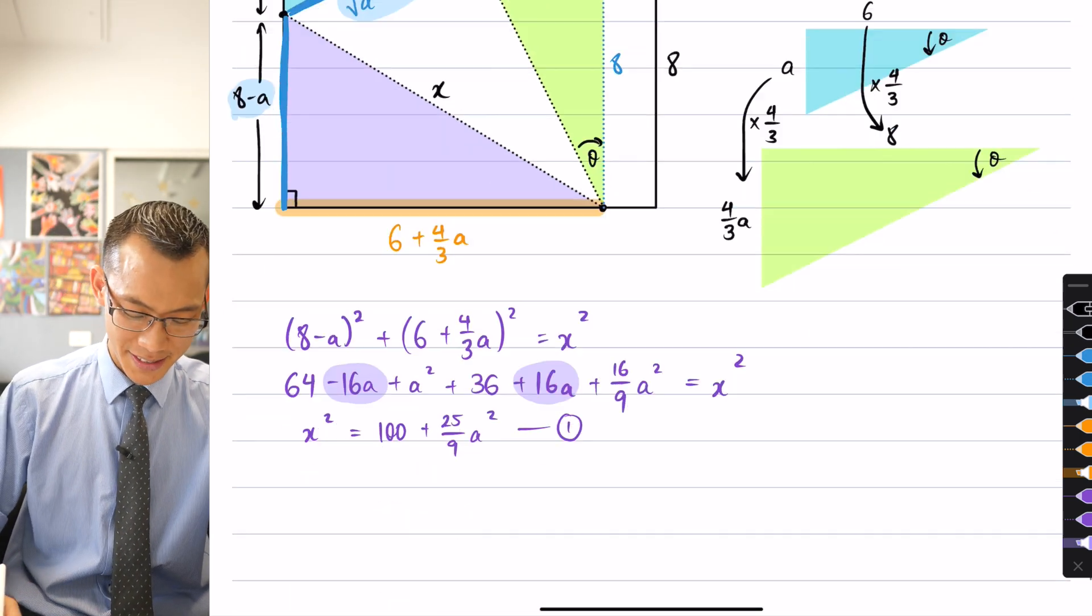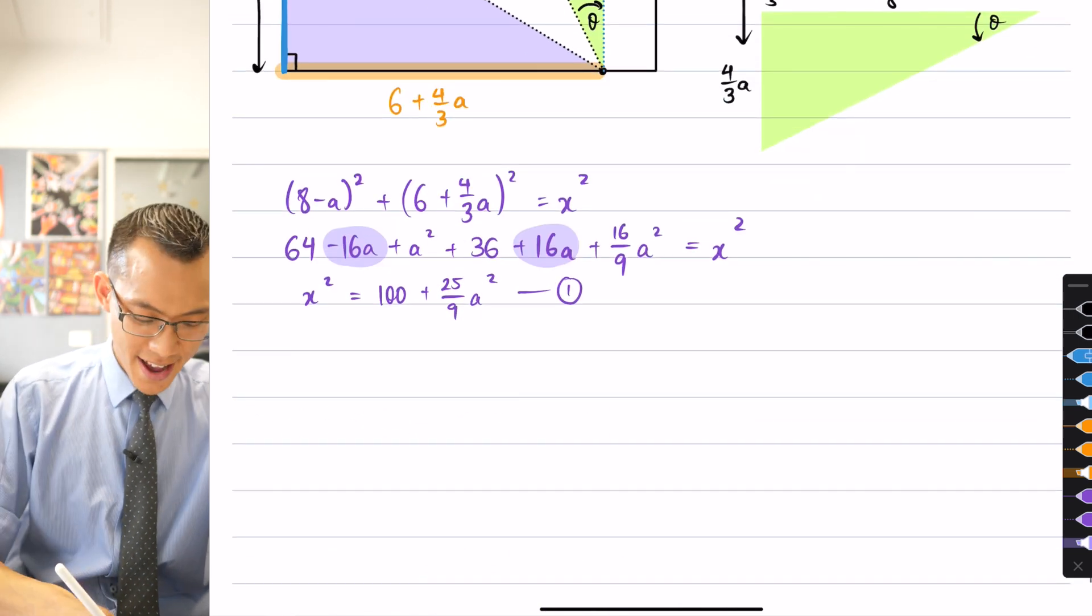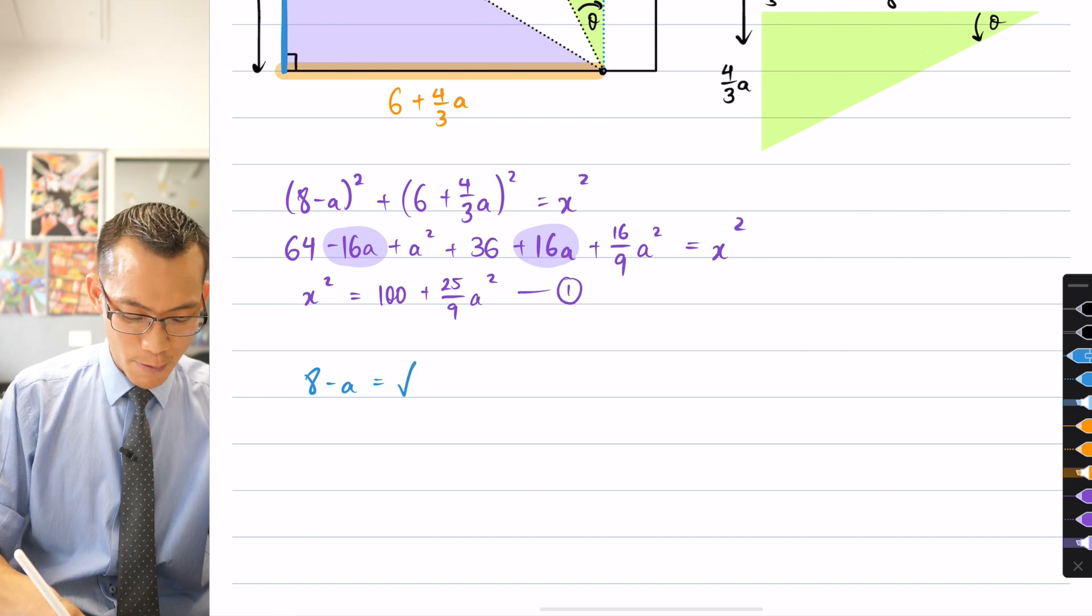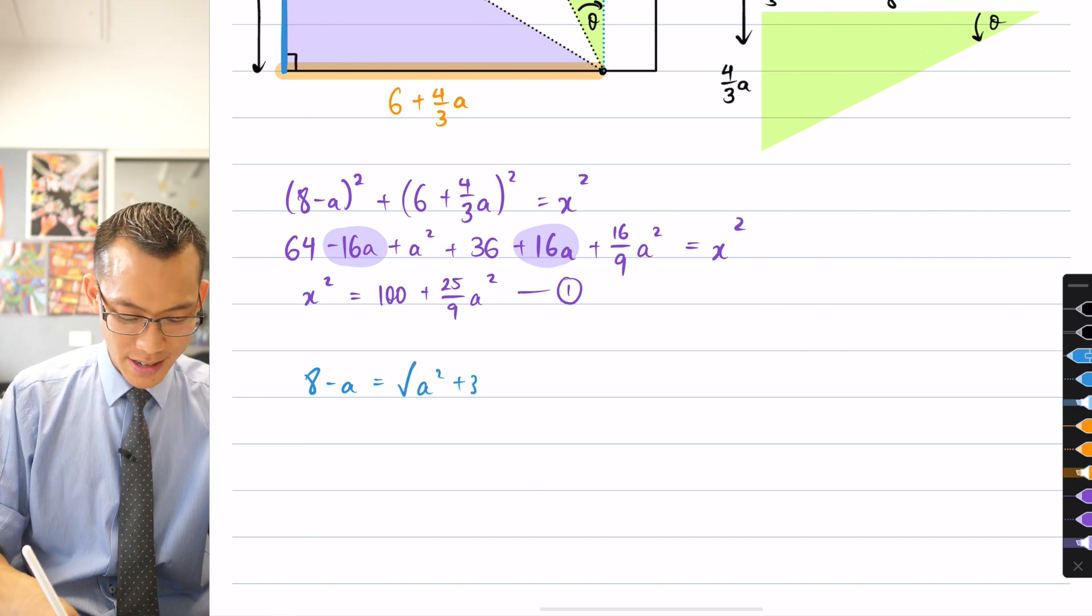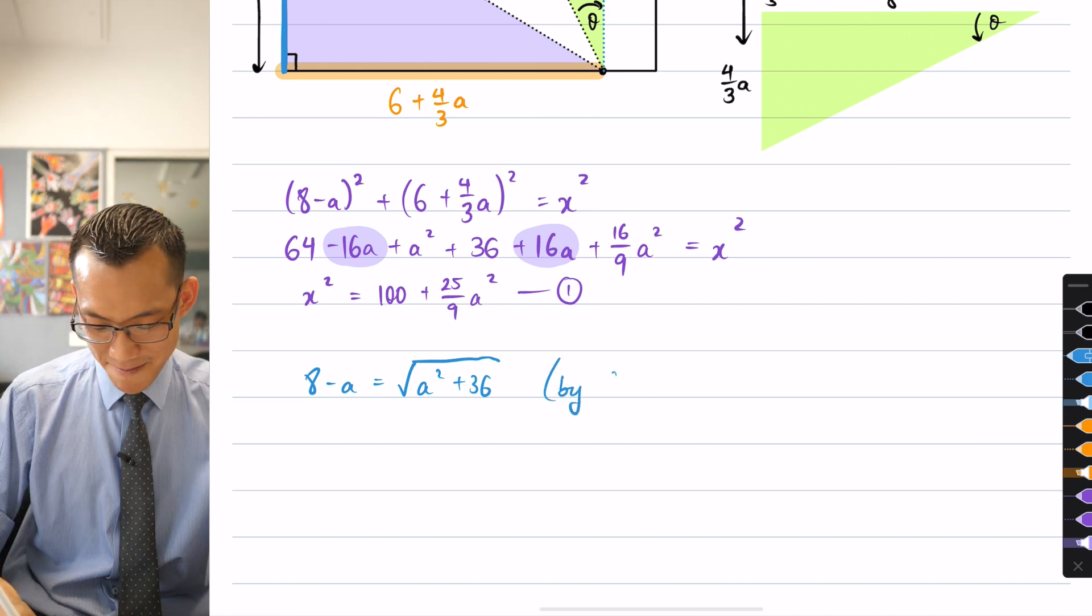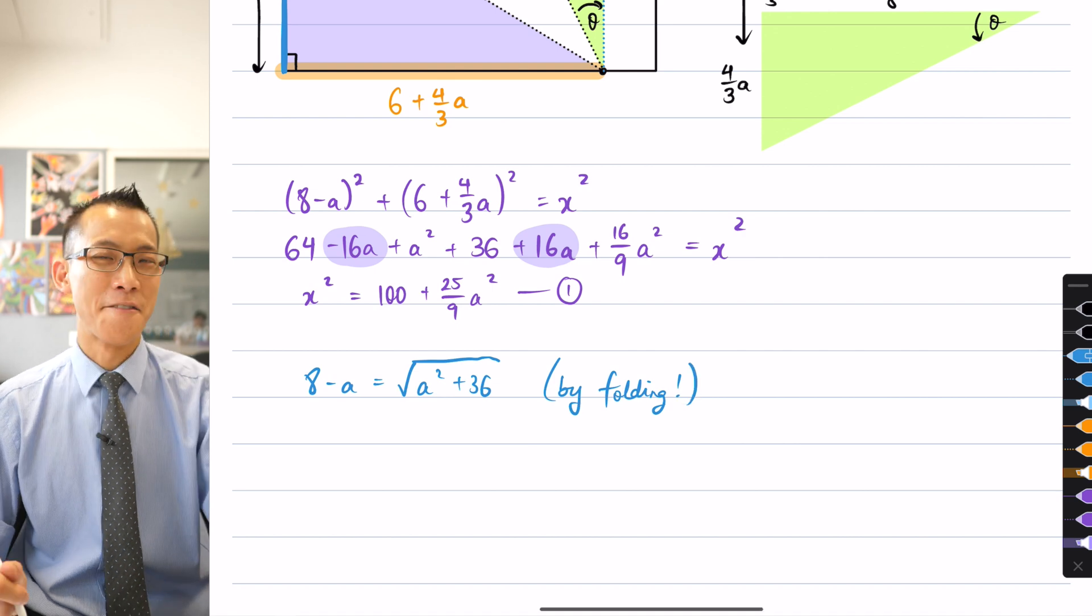So therefore I can equate these, and this is delightful. So I'm doing this in blue. I can say 8 take away A equals the square root of A squared plus 36. What is our reasoning? And I think I'm going to say Pythagoras' theorem, which is just delightful. It's not Pythagoras' theorem, it's that I folded these things. So there's congruence going on between these lengths.